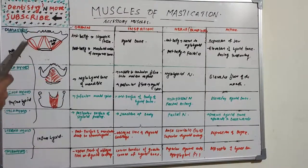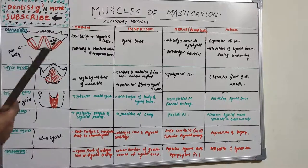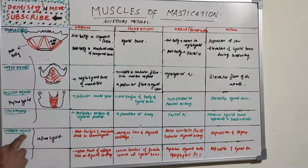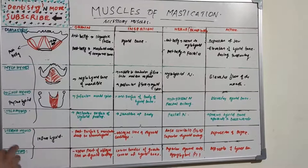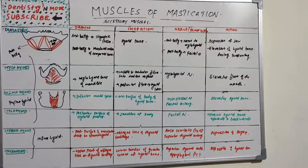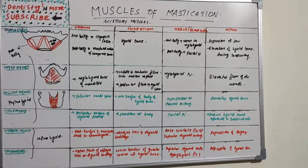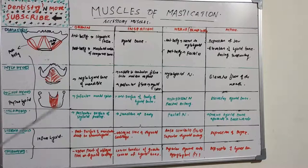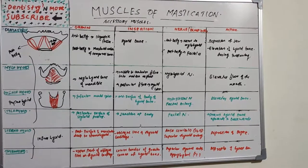The digastric, mylohyoid, geniohyoid, and stylohyoid are all above the hyoid bone and are known as suprahyoid muscles. The stylohyoid's nerve supply is a branch of the facial nerve, and its function is to pull the hyoid bone upward and backward. The infrahyoid muscles — sternohyoid and thyrohyoid — lie below the hyoid bone.